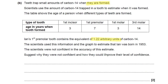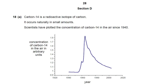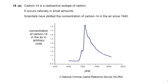The scientists were not confident in the accuracy of this estimate. Suggest why they were not confident, and how could they improve their level of confidence. Think: why are they not confident, and how could they improve their confidence? I think we'll go back to the graph to answer that. Pause the video and have a little go — why are they not confident about the year he was born, given his teeth contain 1.22 units of carbon-14?